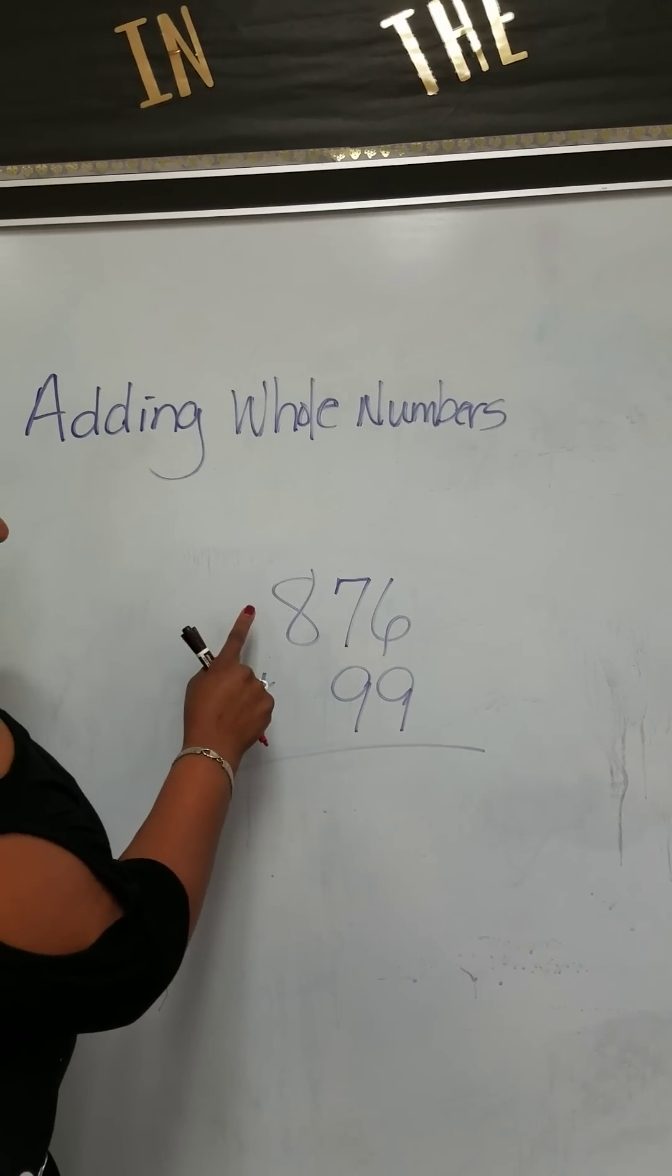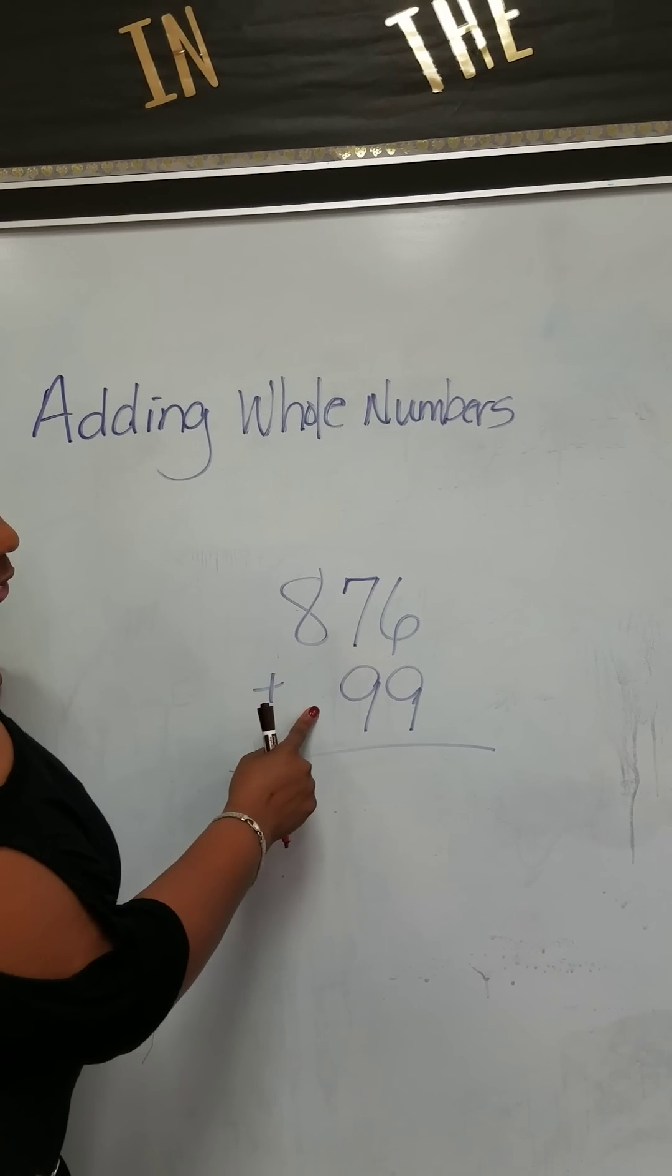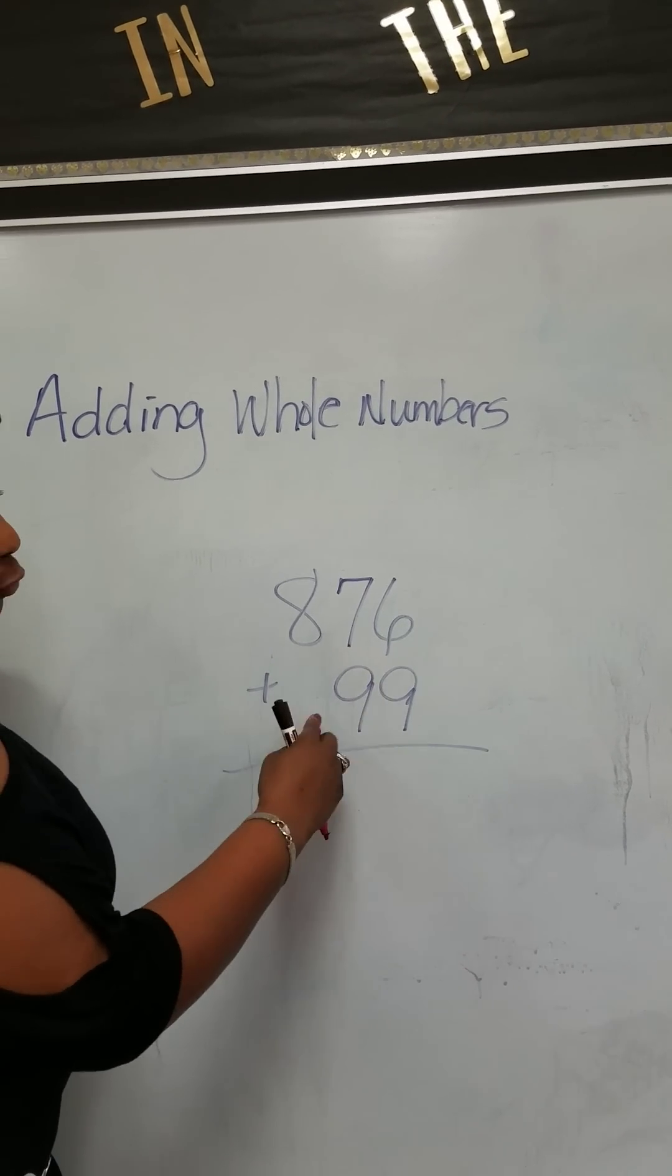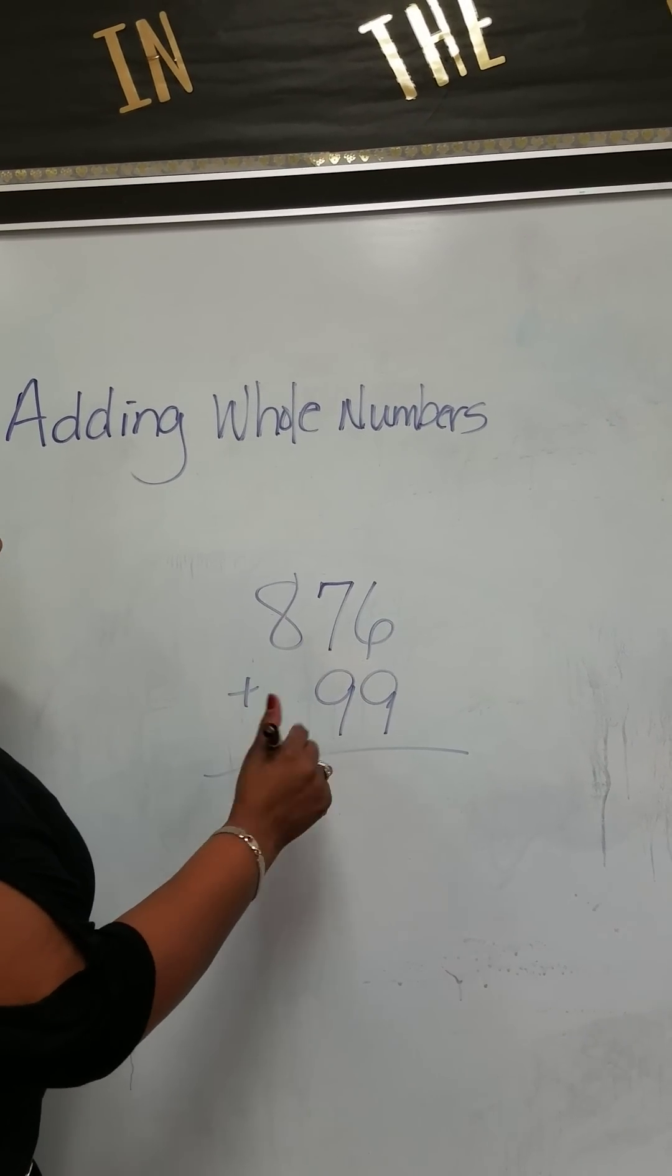We're adding whole numbers. We're going to add 876 to 99. But instead of regrouping, we're going to add them according to their value.